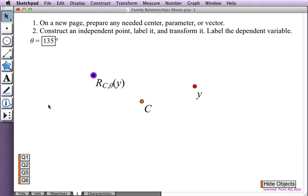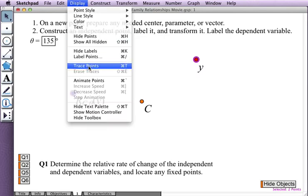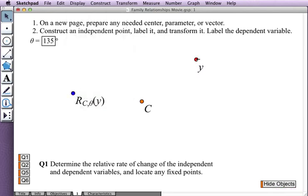I'm ready to investigate the questions in the worksheet. First question asks me about the relative rate of change of the independent and dependent variables and any fixed points. I can notice some things here, but I'll certainly be helped a lot if I turn tracing on for the points. Let's see what happens when I drag the independent variable straight down. The dependent variable moves up and to the right. And I need to do a little bit of thinking to connect that with this angle of 135 degrees.